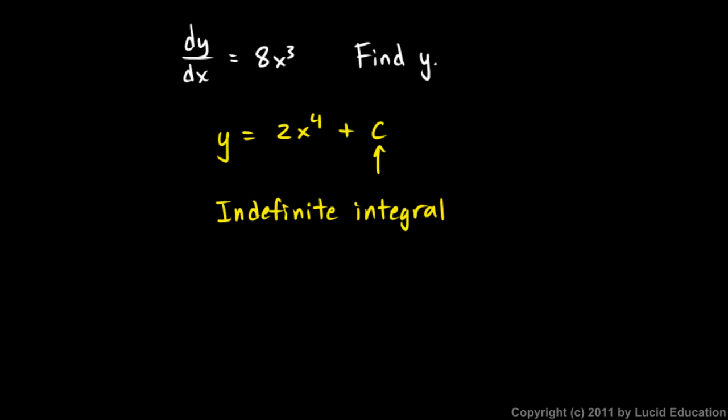We don't know what number c is. c is just a constant, and it could be any number. You could put any number you want for c right there, and this function y will still have as its derivative, 8x³.